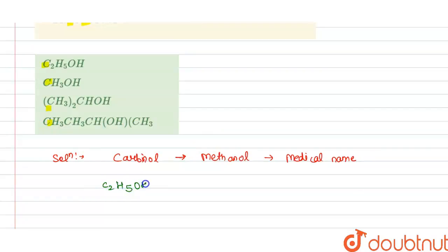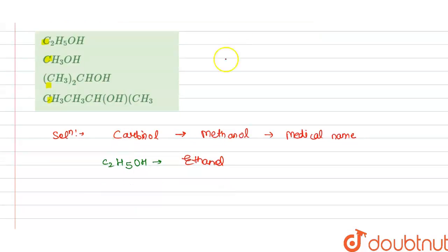So we have firstly C2H5OH. So we know that this is our ethanol. Now we check for CH3OH.